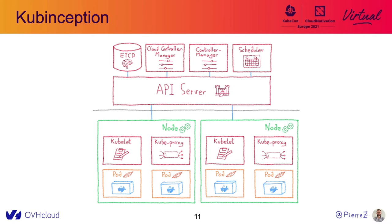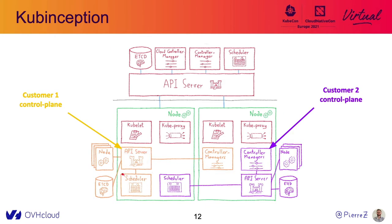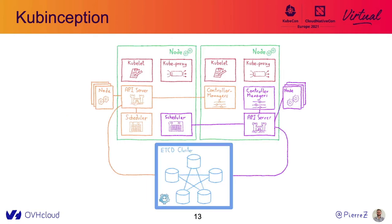We have a managed Kubernetes product at OVHcloud, and to build it, we did something that we call kubception — we are using Kubernetes to deploy Kubernetes. Here we have a standard Kubernetes cluster, but in our case, instead of running WordPress, Kafka, or any other applications, we are running the control plane of our customers in it. So here in yellow you have customer 1 with the API server and so on, and then we have customer 2. Control planes are handled, but now we need to worry about the data. And instead of deploying thousands of etcd nodes, we decided to mutualize them and use a huge etcd cluster for hundreds of customers.